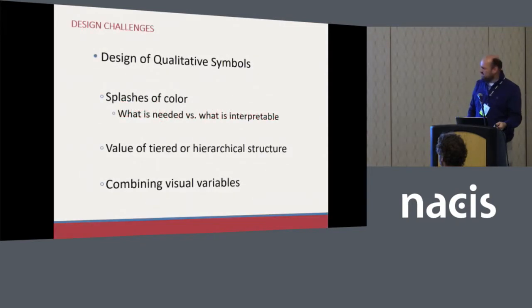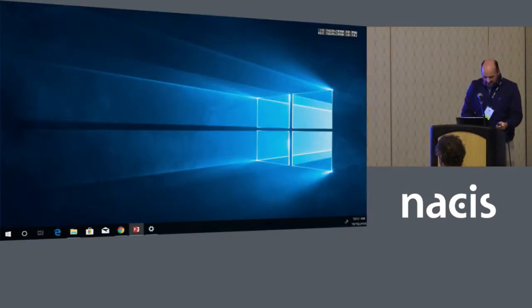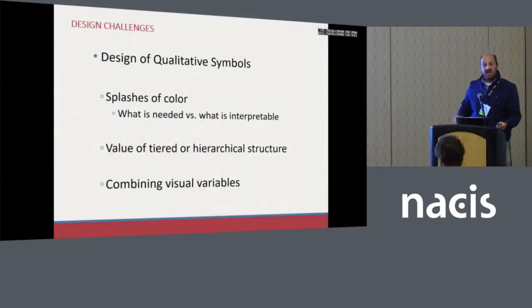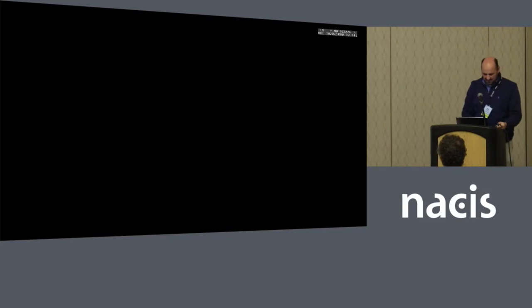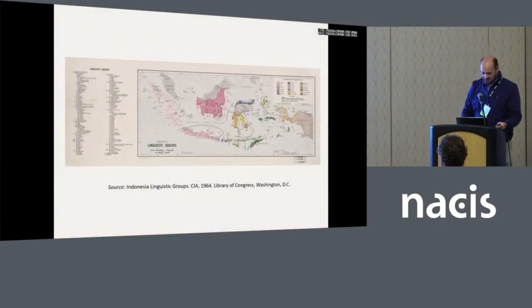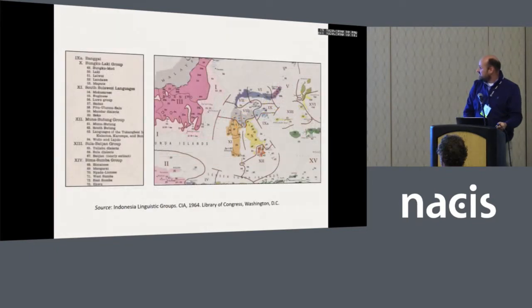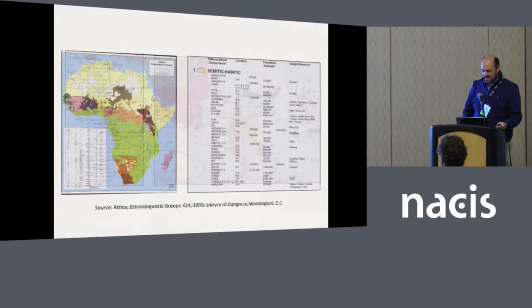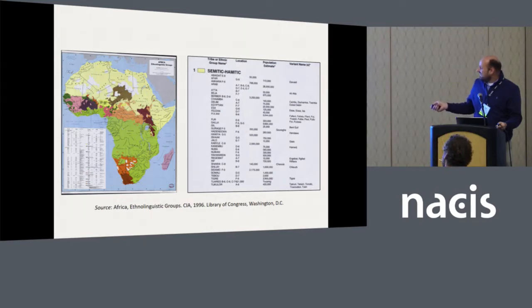Let me end with a couple of design challenges. I don't have all the answers here — this has raised a lot of questions for me. One question is the design of qualitative symbols. As you can see, there are a lot of splashes of color. What is needed versus what is interpretable is a key question. A tiered or hierarchical structure is very important and can be helpful, allowing us to combine visual variables. One example is a map of language groups in Indonesia where color represents the major language family and text is added to show the actual location of specific languages. Similarly, another map shows ethnolinguistic regions with color and grid coordinates indicating the specific ethnolinguistic group.